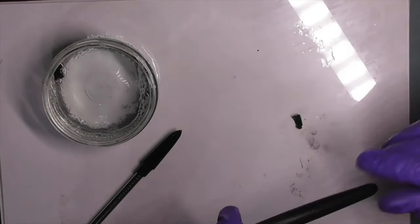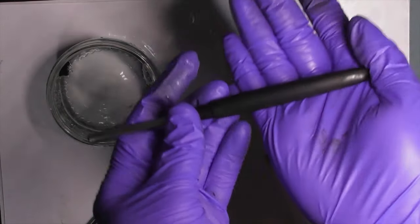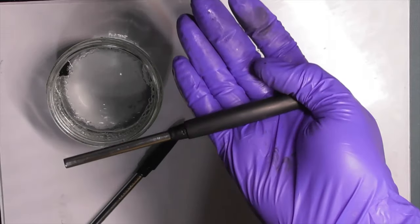If you sand through the top coat, you will need to clean and dry the pen and redo from step eight. Sorry meow.